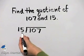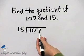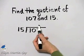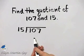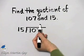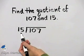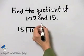How many times does 15 divide into 107? Well, let's make a guess. 4 times 15 I know is 60. 6 times 15 is 90. Let's try 7.